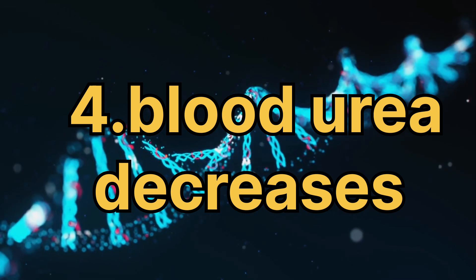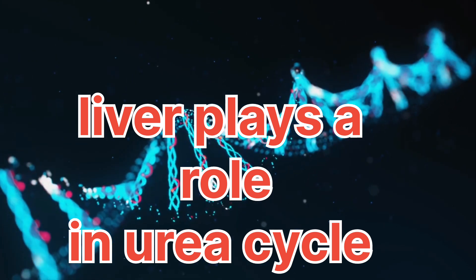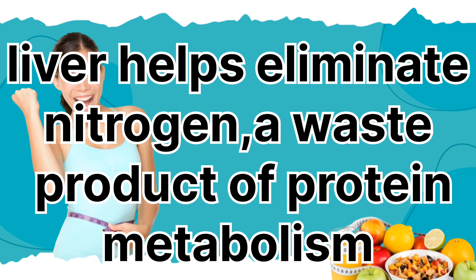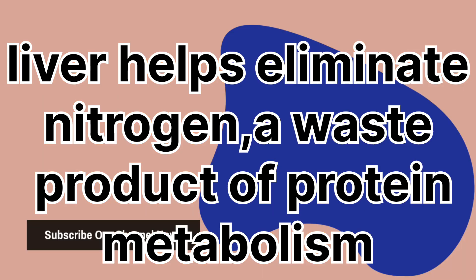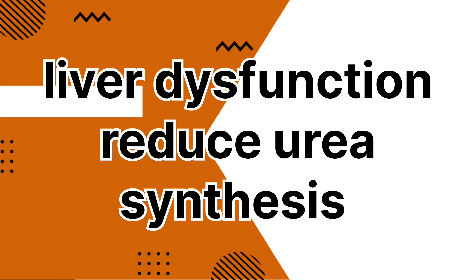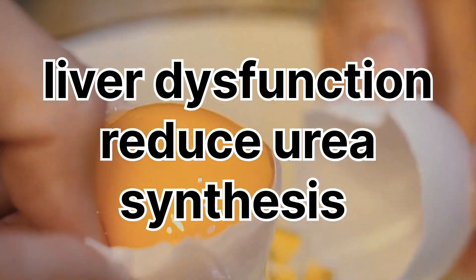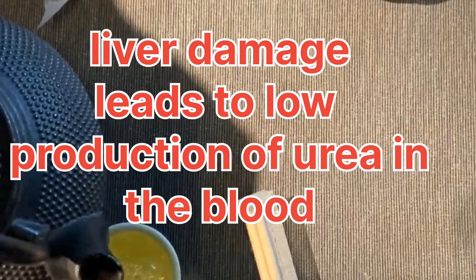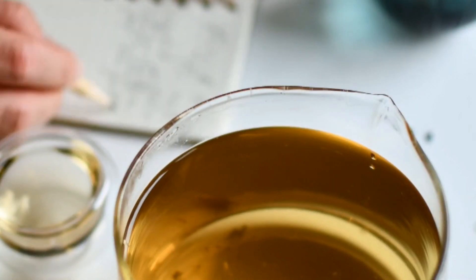Number four: decreased blood urea. Liver dysfunction can indirectly impact blood urea levels due to its role in the urea cycle. The urea cycle is a series of biochemical reactions in the liver that help eliminate nitrogen, a waste product of protein metabolism. Liver dysfunction can affect this process in several ways. First, reduced urea synthesis: the liver is a key organ in synthesizing urea, and liver damage or dysfunction can lead to a decrease in urea production, impacting the overall level of urea in the blood.